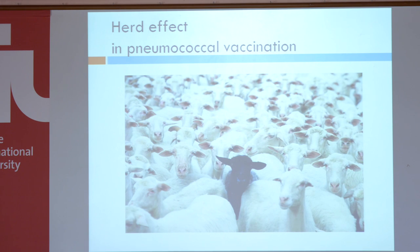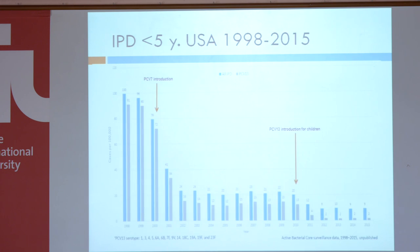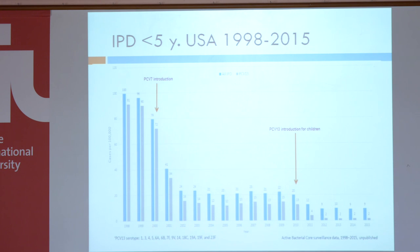What about herd protection? This black sheep is not vaccinated — but is it protected by the vaccinated white sheep for pneumococcal disease? These are data from the United States. Why look at the United States? They have the longest history of vaccination against pneumococcal disease, both in adults and in children, and they have a good registration and surveillance in place — so data that are trustworthy.